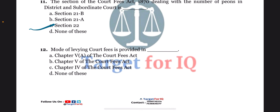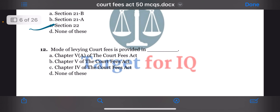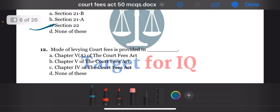Next question: mode of levying court fees is provided in dash. The options are A. Chapter 5A, B. Chapter 5, C. Chapter 4, or D. None of these. The correct answer is option B. Chapter 5.